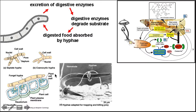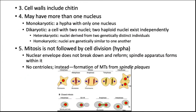Some fungi are actually active predators. They can snare, trap, and even fire projectiles into nematodes (worms). The hyphae can be adapted for trapping and killing prey. Other organisms that can be preyed upon by fungi include rotifers — which you saw in your virtual pond lab — and even small animals.